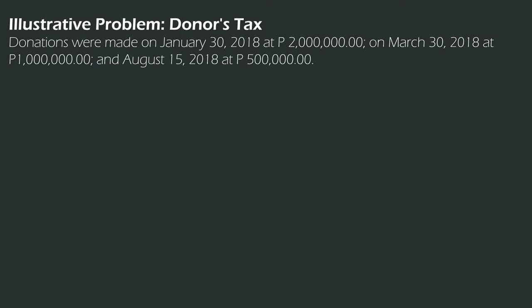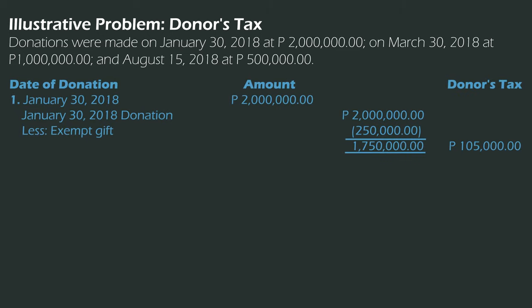Donations were made on January 30 for 2,000,000, on March 30 for 1,000,000, and on August 15 for 500,000. For the first donation on January 30, the donation is 2,000,000. Deducting the 250,000 exempt gift, our taxable donation is 1,750,000. Multiplied by 6%, the donor's tax for January is 105,000.